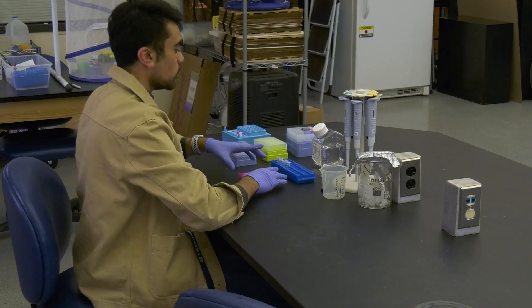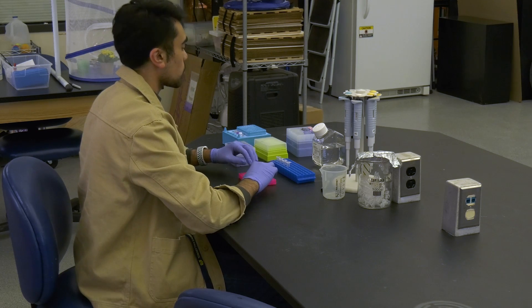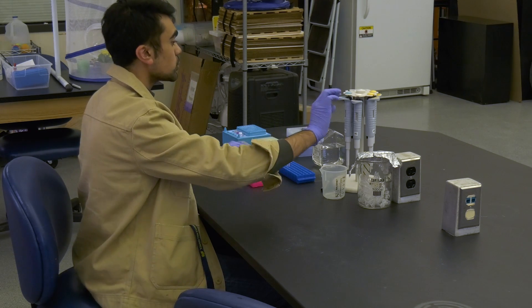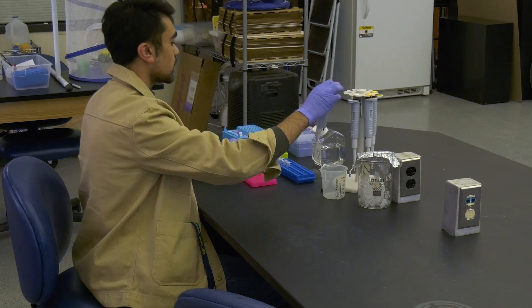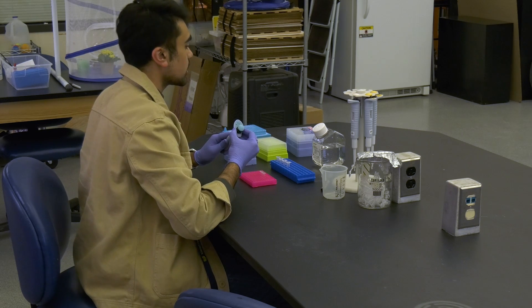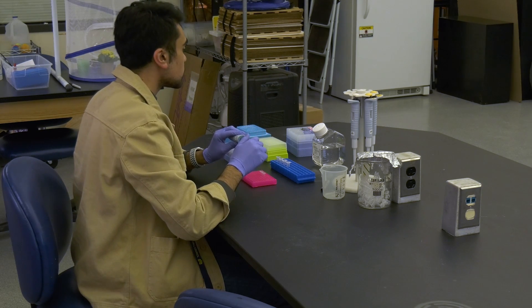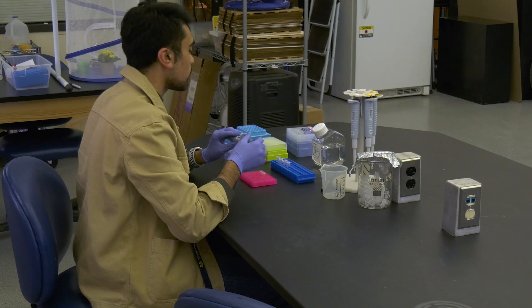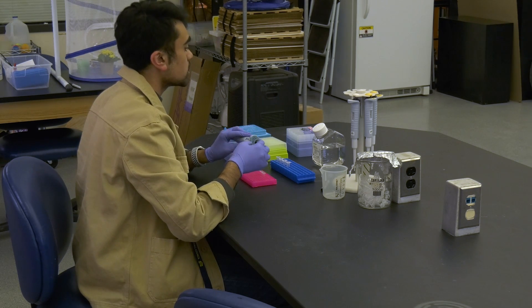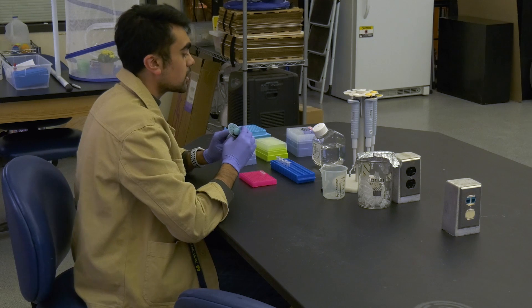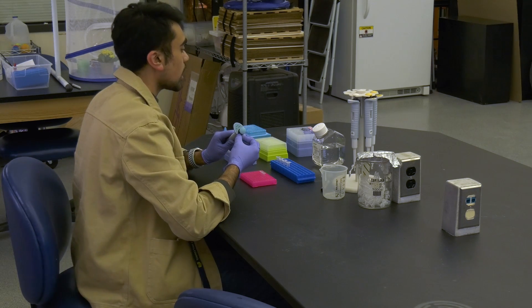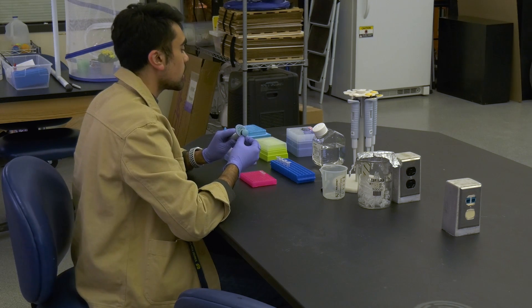Today we're going to be going over a cDNA protocol. That pretty much encompasses us making cDNA after isolating RNA. This cDNA is going to be specific to our microRNAs that we have isolated and microRNAs of interest. The initial step is pretty much adding our primers and annealing them.